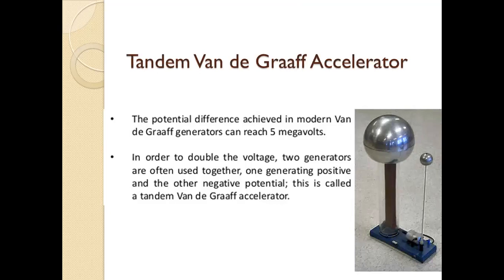With both positive and negative charge accumulation on the spherical shell, a tandem Van de Graaff accelerator uses two shells. The tandem Van de Graaff accelerator is the modern version and can generate double the voltage compared to a single Van de Graaff generator.